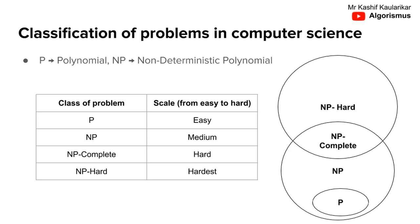If we label them based on the easy to hard scale, we can say P is easy, NP is medium, NP-complete is hard, and NP-hard is the hardest.